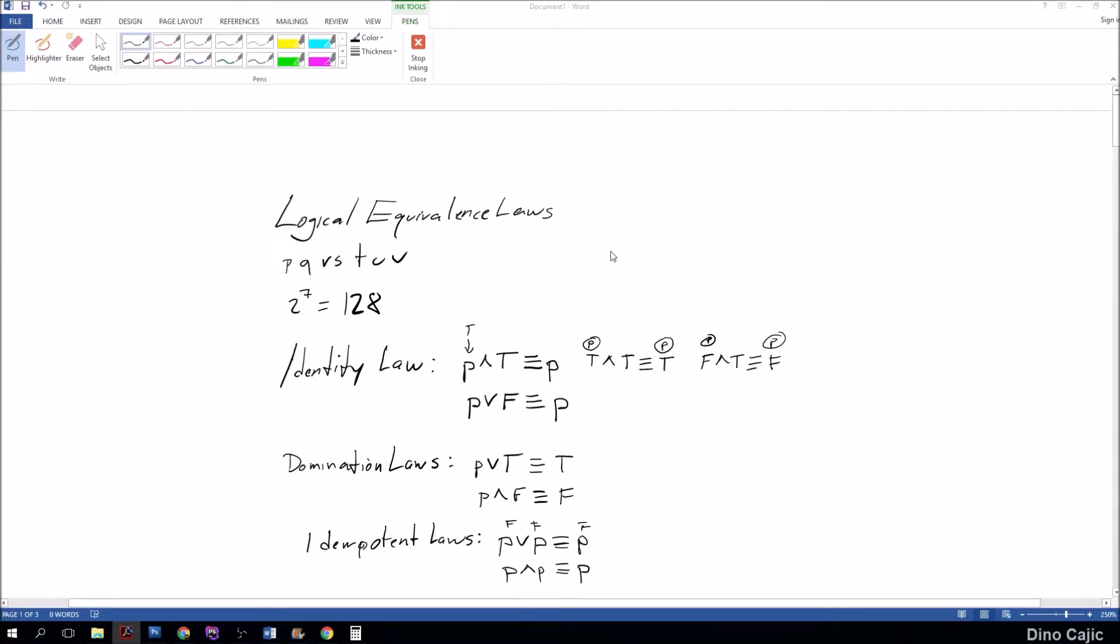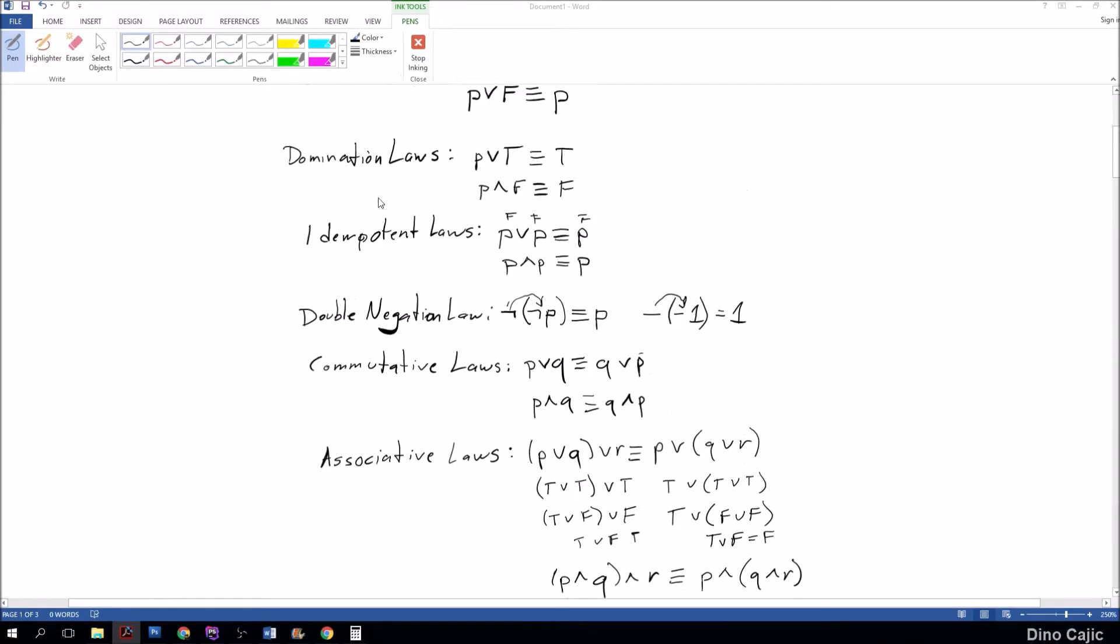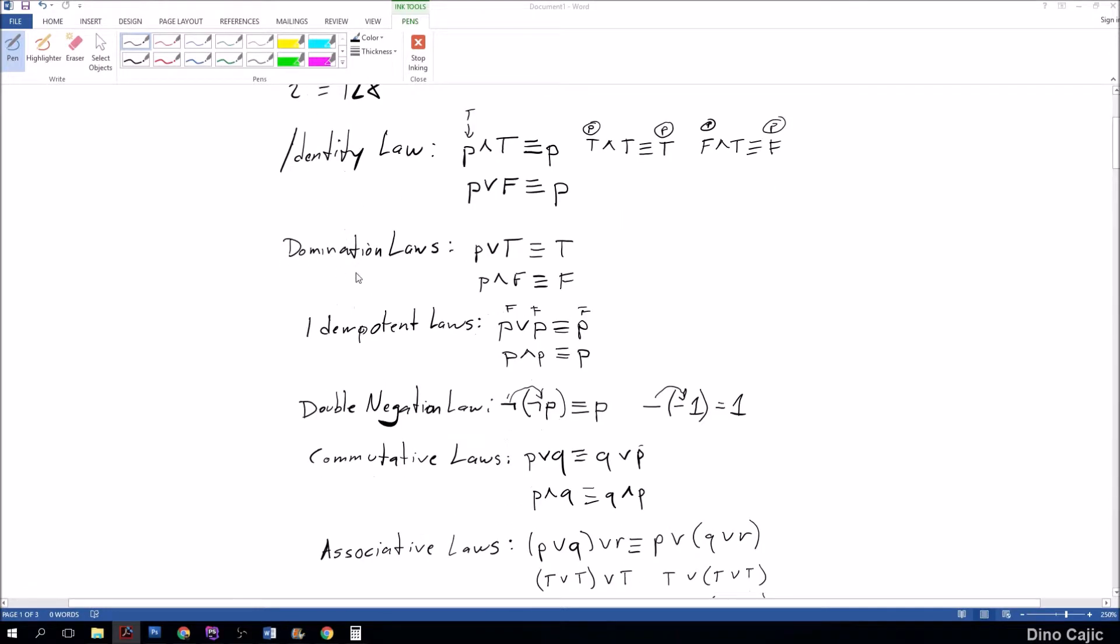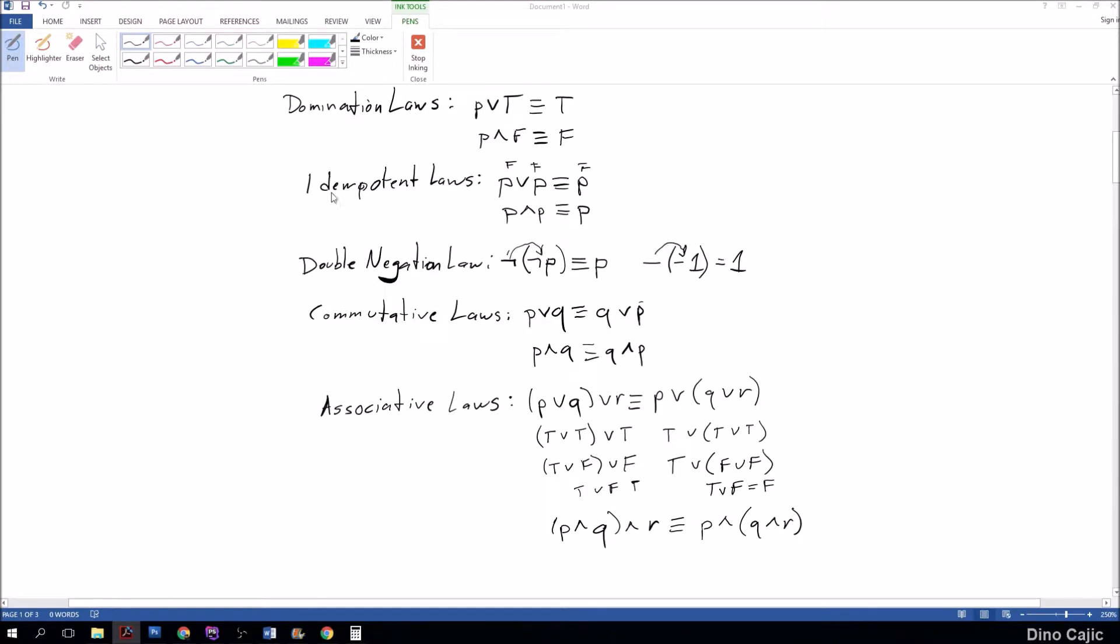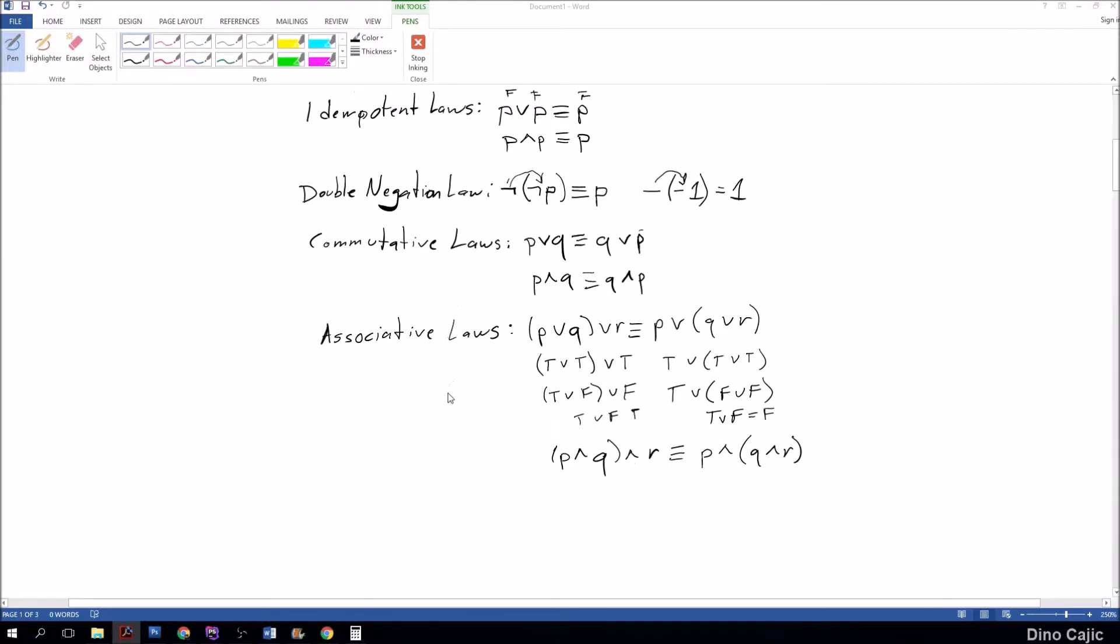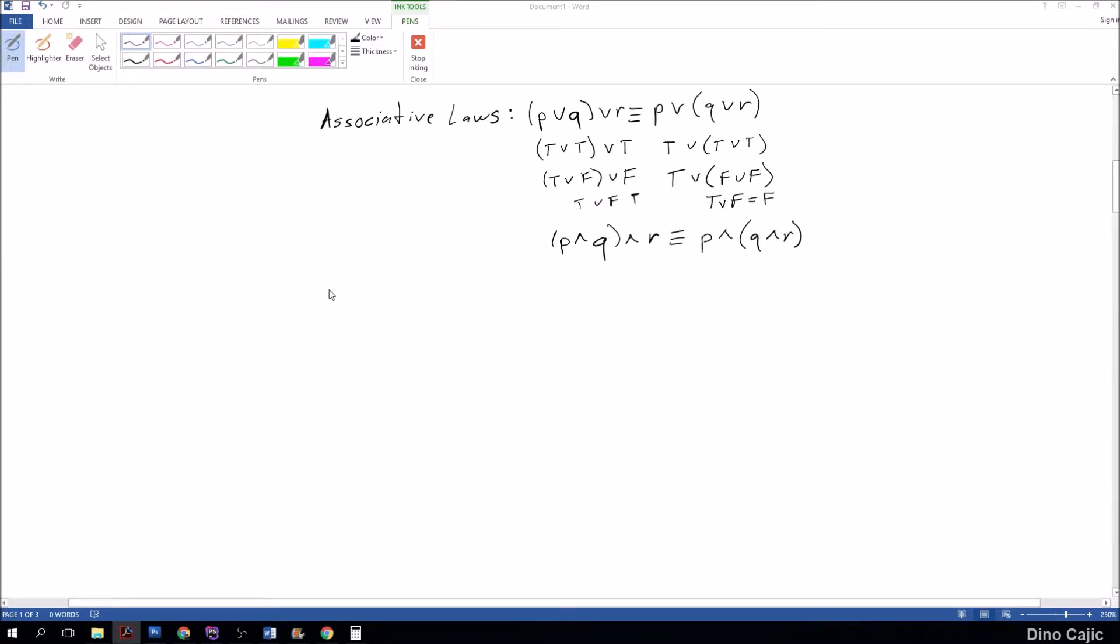Let's continue on with our logical equivalence laws. So we've gone over the identity law, the domination law, the idempotent laws, the double negation law, the commutative laws, and the associative laws. We'll go ahead and focus on the distributive law next.